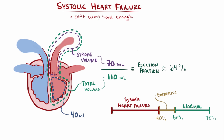As an example of systolic heart failure: if the total volume of the left ventricle was 110 milliliters but only 44 milliliters was pumped out with each beat, then you have 44 divided by 110 milliliters, which is 40%, and we would say that person is in systolic heart failure.